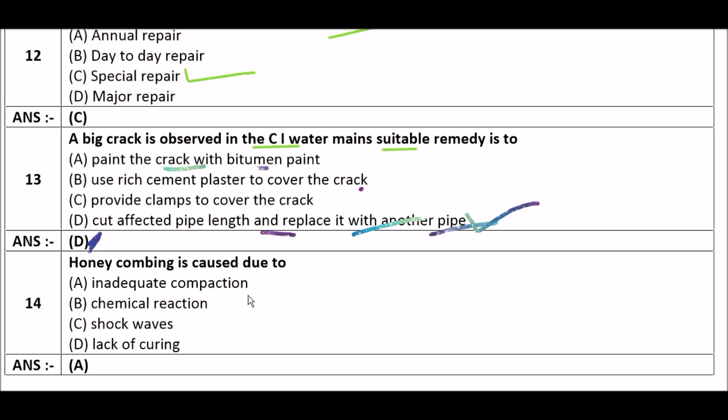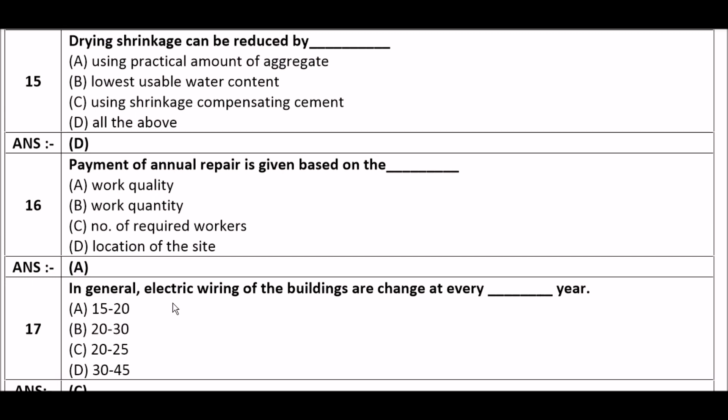Next question: Honeycombing is caused due to — option A: inadequate compaction, option B: chemical reaction, option C: shock waves, option D: lack of curing. The right answer is option A, inadequate compaction. Honeycombing is caused due to inadequate compaction.